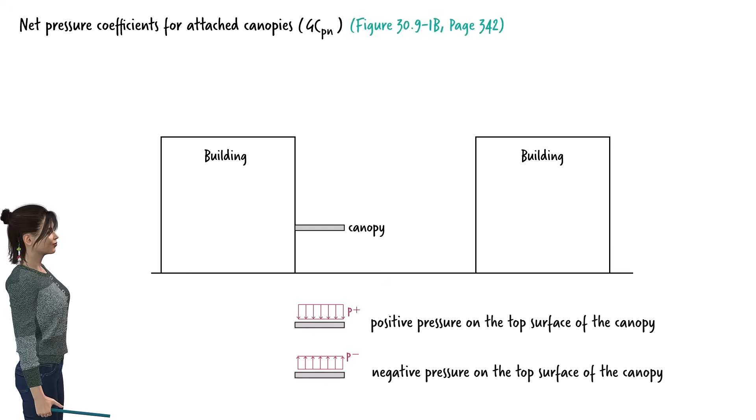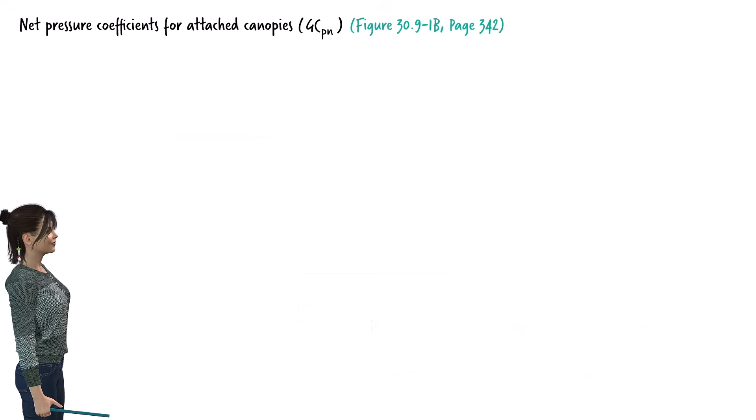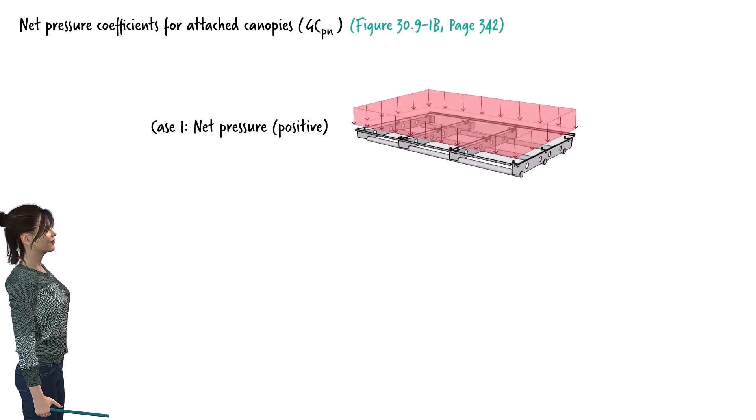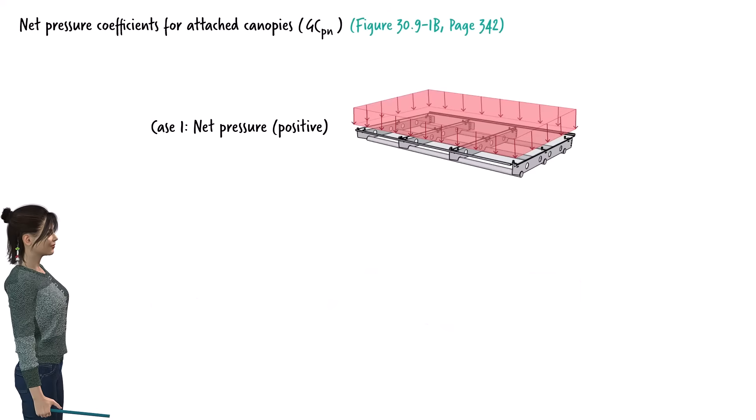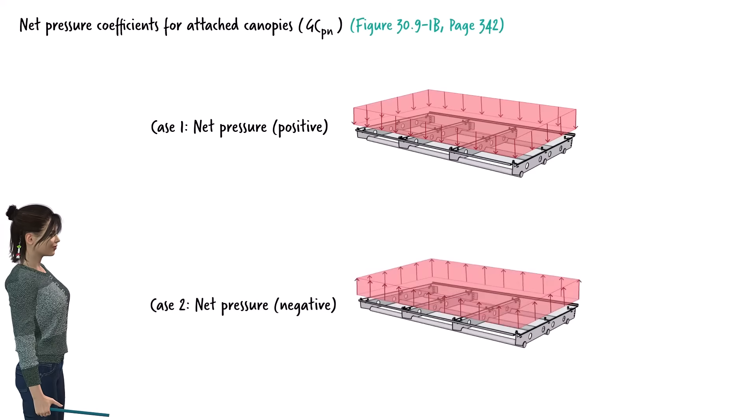This means that we need to consider two cases. Case 1, when the net pressure acting on the canopy's skeleton is positive, and case 2, when the net pressure is negative.